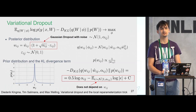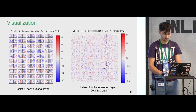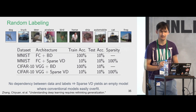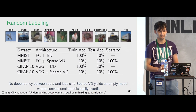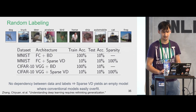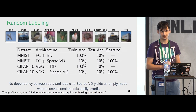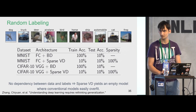Q&A on rethinking generalization: The explanation is that with randomly permuted labels, there is no real dependence between inputs and outputs, so the network needs a lot of capacity to memorize those dependencies. This means the KL divergence term would be very high because you cannot compress the network well, and the KL term overpowers the data term, forcing complete sparsification of the whole network.